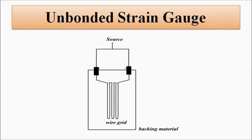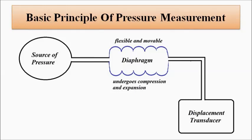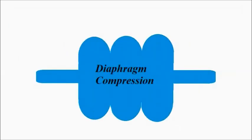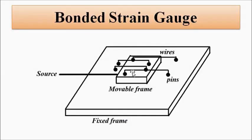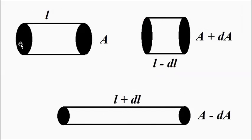When pressure fluctuations happen, the diaphragm undergoes expansion and compression. As a result, the movable frame in the bonded strain gauge moves left or right, causing the wires to get stretched or compressed. They can either elongate or compress. Suppose a wire in its original form undergoes expansion — it elongates, so there will be an increase in length by a margin dL and a reduction in area by a factor of minus dA. Similarly, if it undergoes compression, length decreases by a factor of minus dL and area increases by a factor dA.